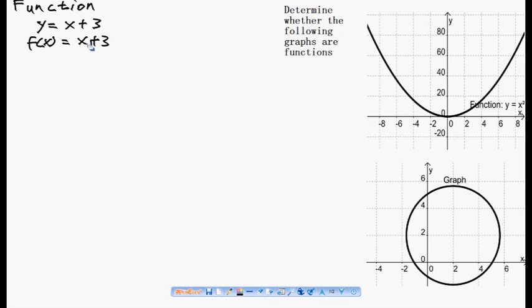Both of the graphs here are the same. In the first graph is y equals to x plus 3. The second graph is f(x), function of x equals to x plus 3. y and f(x), in this case, are the same. So it's just different ways to write equations.